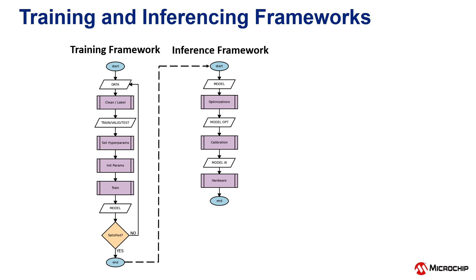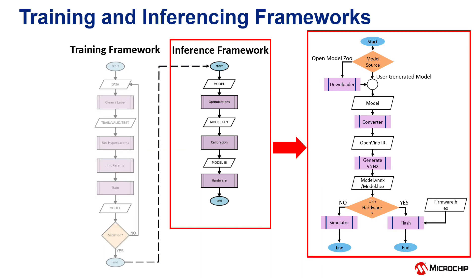The trained networks are then passed to an inferencing framework where they are optimized and formatted for the target hardware. The flowchart to the right is the Core Vector Blocks SDK flow, which implements inferencing framework functionality. It targets Microchip's world-class PolarFire mid-range FPGA family.